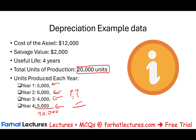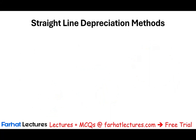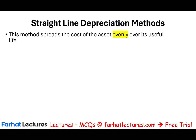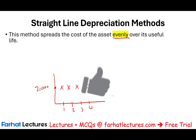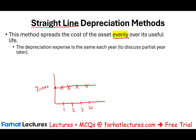We're going to look at various depreciation methods — we'll cover three. The first is the straight-line method. This method spreads the cost of the asset evenly over its useful life. Looking at a graph with years on the x-axis, it's going to be the same amount every year: year one $2,000, year two $2,000, year three $2,000, year four $2,000. When you draw a line, it looks like a straight line — that's why it's called the straight-line method, because you depreciate the asset the same amount every year.